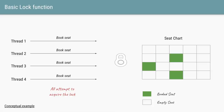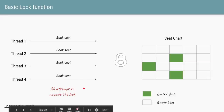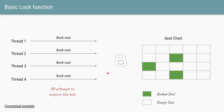One of the solutions to this problem is we allow only one thread to book a seat at a time. For this, let's introduce the concept of a lock. We have four threads on the left-hand side and all four of them are trying to book the seat simultaneously, so they all try to acquire the lock. We are going to allow only one thread to get that lock at a time, and only the owner of the lock is able to access the seat chart.